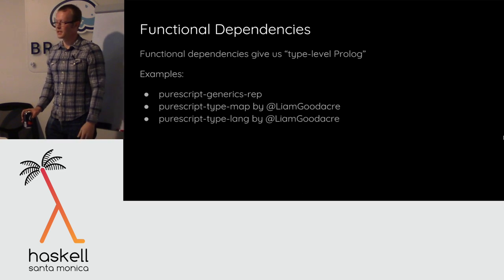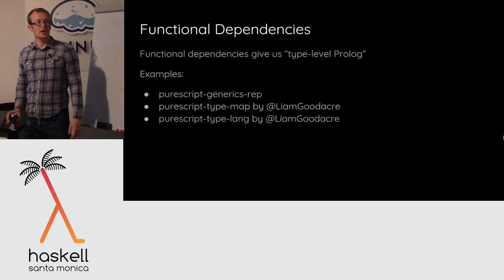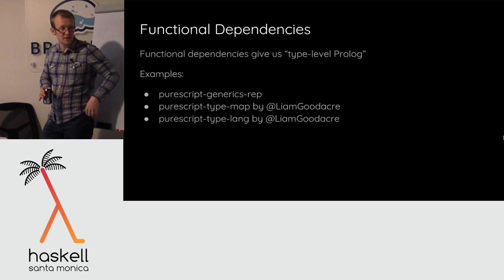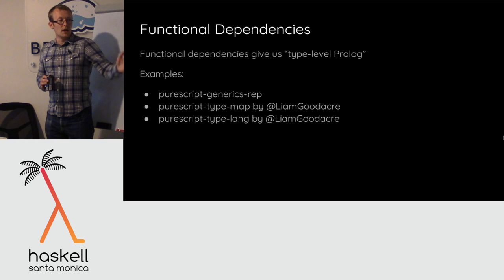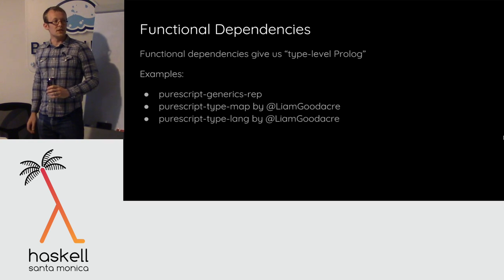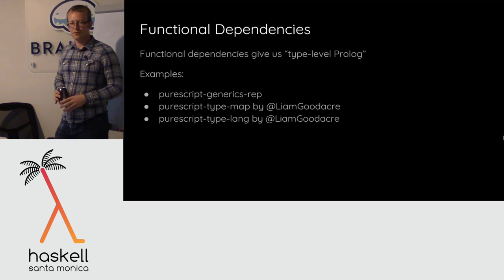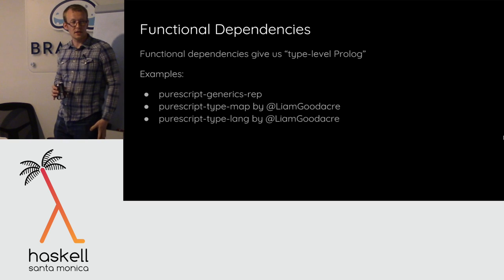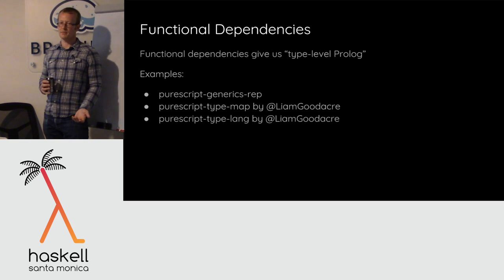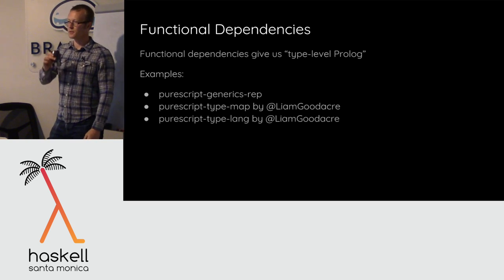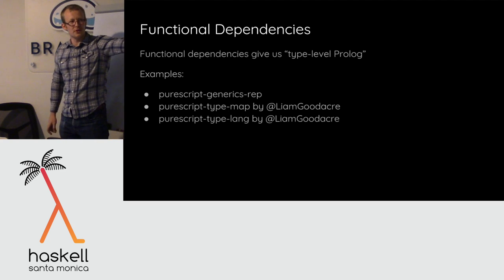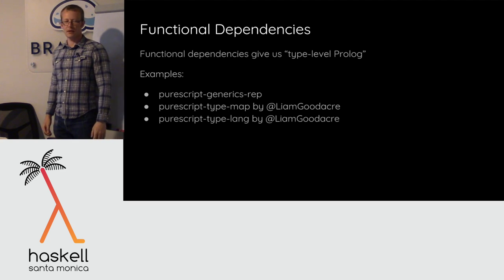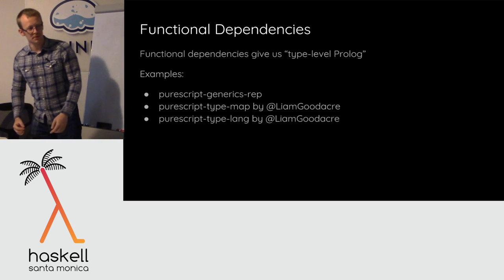The major application was initially Generics Rep, but now there are whole bunches of really interesting applications. Two examples by Liam Goodacre: PureScript TypeMap, a full implementation of balanced 2-3 tree maps with insert, delete, and rotate operations expressed as type-level functions with functional dependencies; and TypeLang, a full interpreter for the simply-typed lambda calculus implemented inside the type system using functional dependencies.